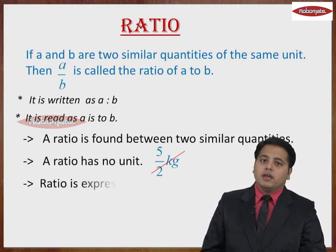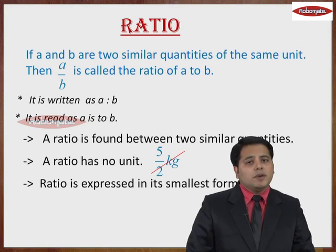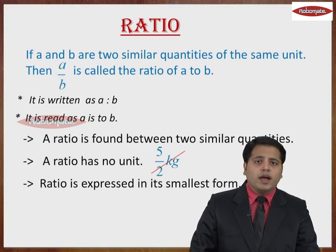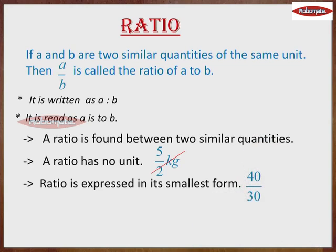The third point, Ratio will always be expressed in the smallest or the simplest form. For example, if you have a ratio as 40 is to 30, we would write it as 4 is to 3, that is 4 upon 3. So in a ratio, we just compare 2 quantities having the same unit and which are similar.